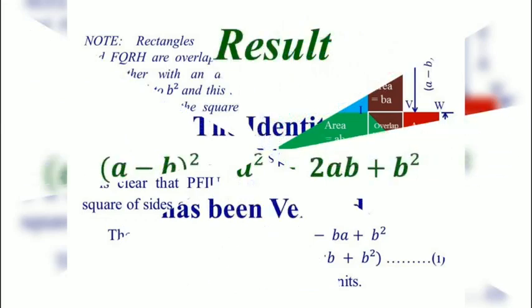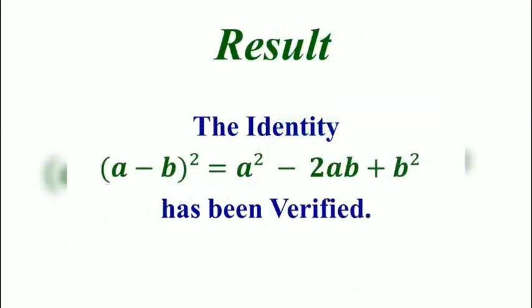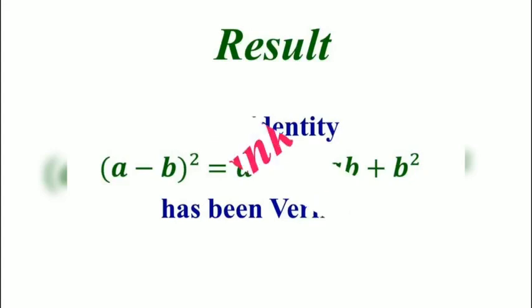From this activity we got the result: the identity A minus B whole square is equal to A square minus 2AB plus B square has been verified geometrically. Thank you.